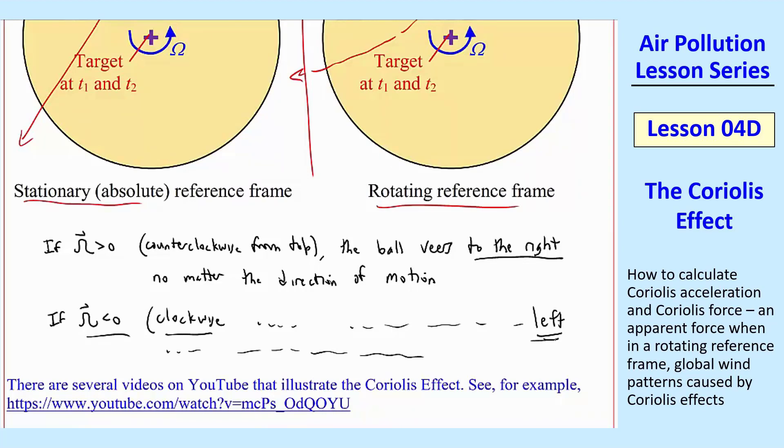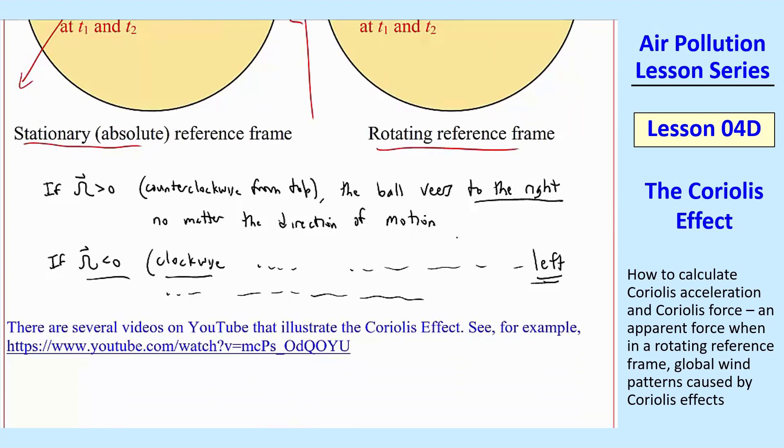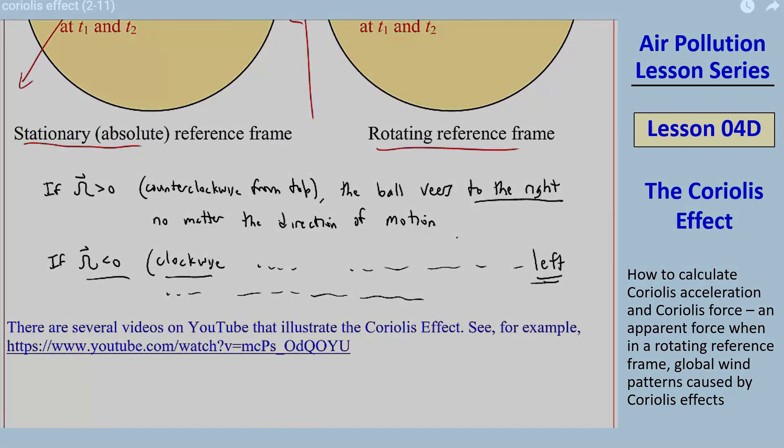And then the ball veers to the left no matter the direction of motion. Now there's some videos, if you just type in Coriolis, you'll see all kinds of videos that try to explain this. One of the best ones is this one that I have here, and I'll show you that.